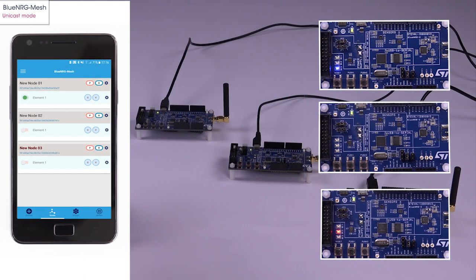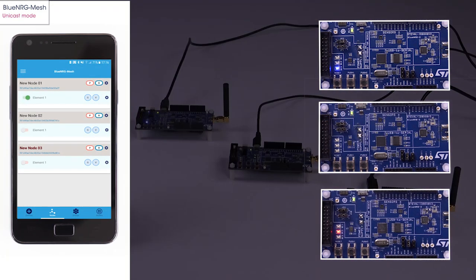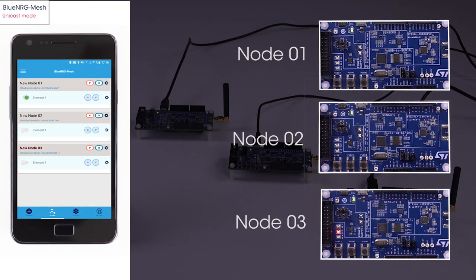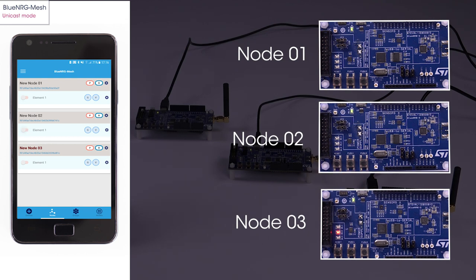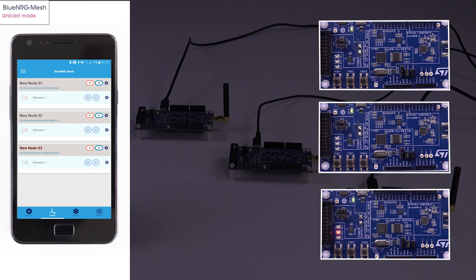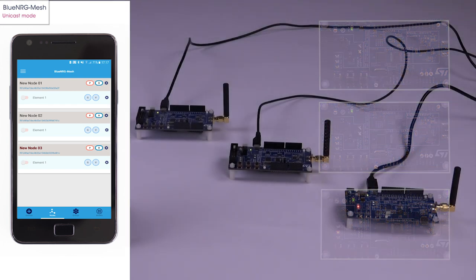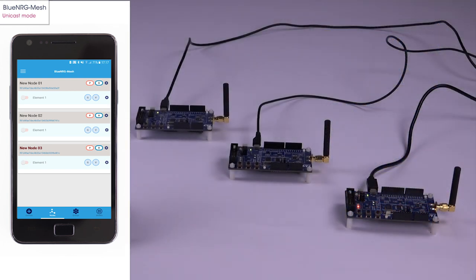Unicast commands are sent from the nodes view. To turn on and off the LED, tap the toggle switch and the specific node will receive the command. That's it for the single node section.